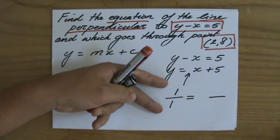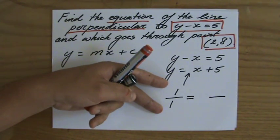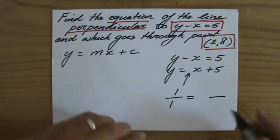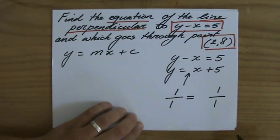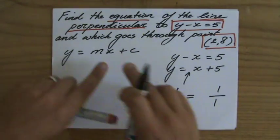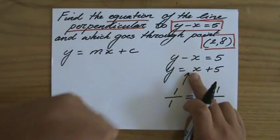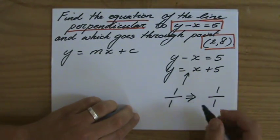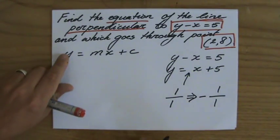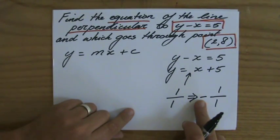But the gradient of this line is not just a reciprocal of the gradient of that line, it is the negative reciprocal as I just put an arrow there. So the gradient of my line is minus 1 over 1 and that is minus 1. So the gradient is minus 1x plus c.